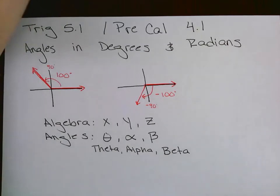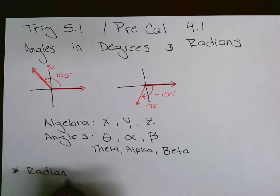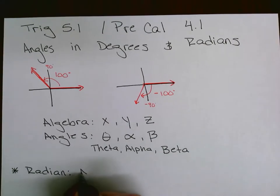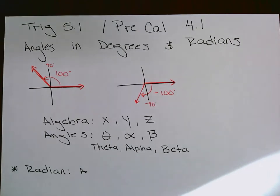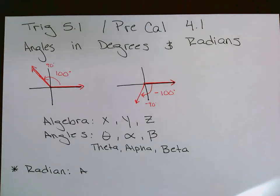Moving on to slide 4, which talks about what a radian is. A radian is specifically: if you have a circle with a specific radius — say the radius is 5 meters — then one radian is 5 meters along the arc of the circle. One more time: if the radius is 5 meters, then one radian equals 5 meters along the circle, the arc length.